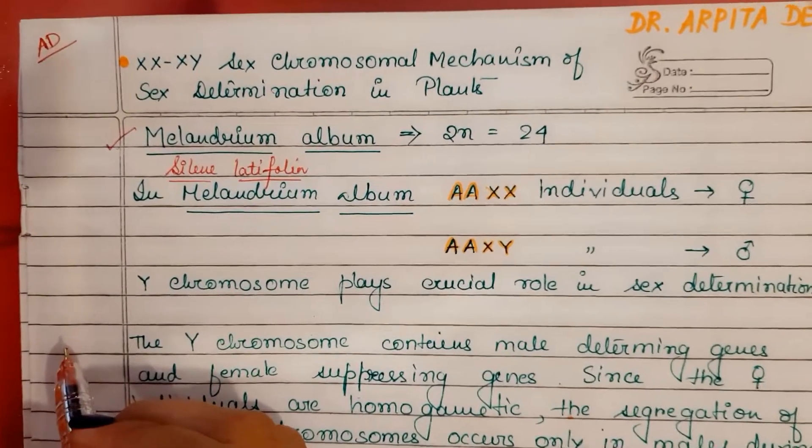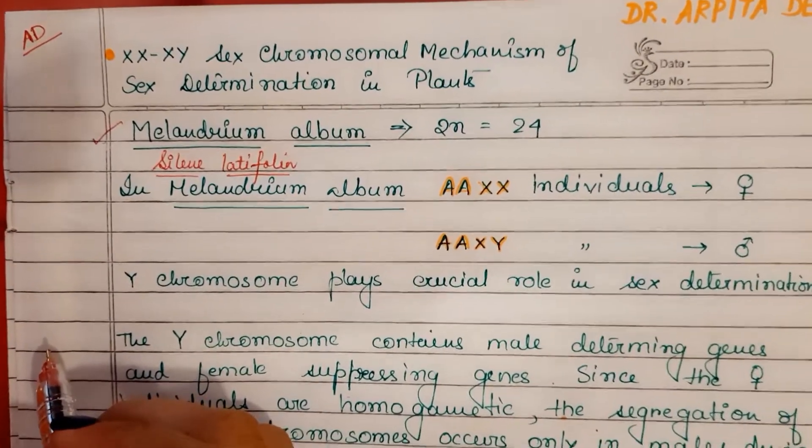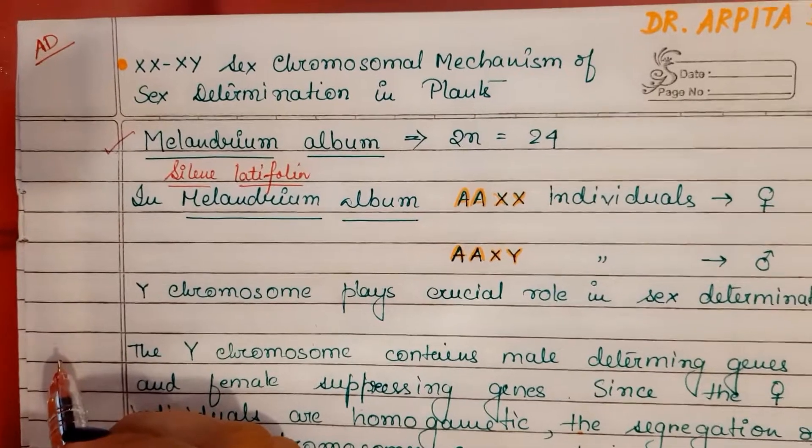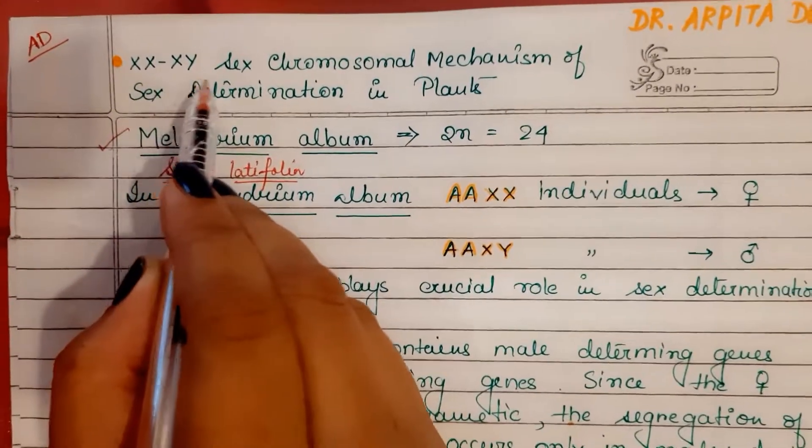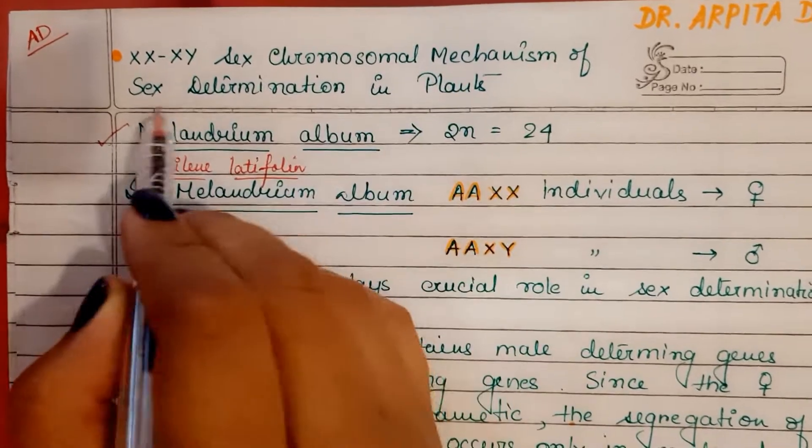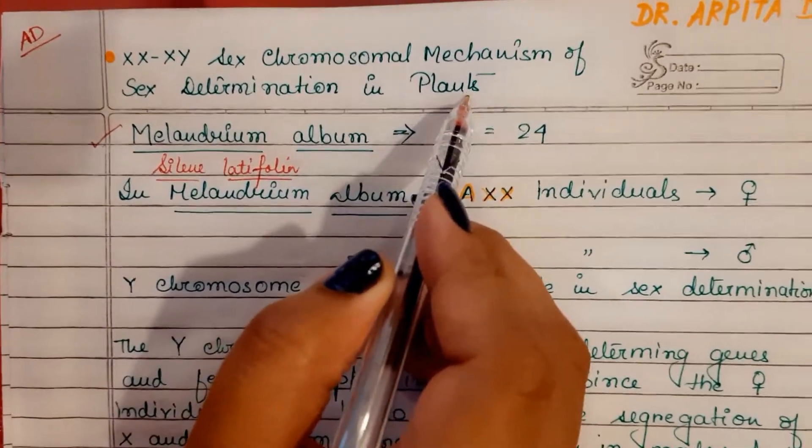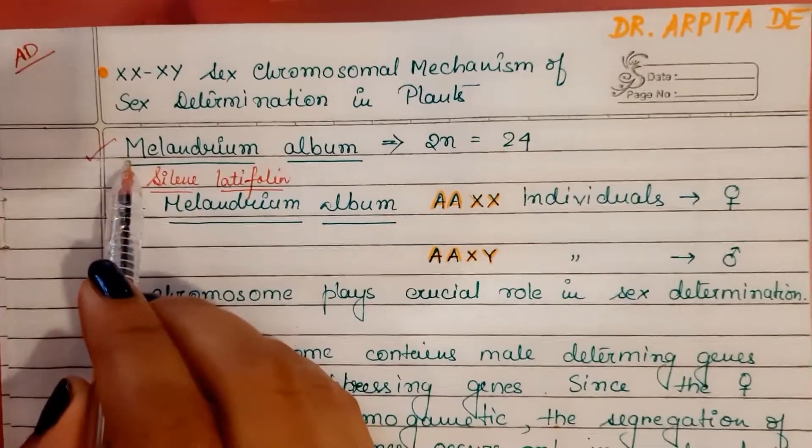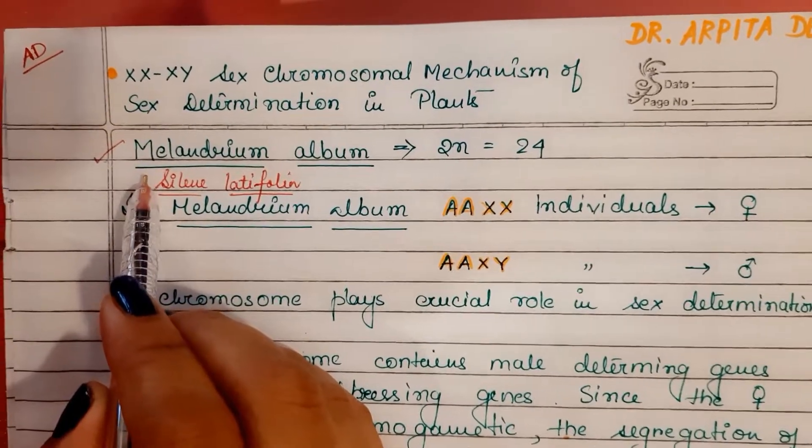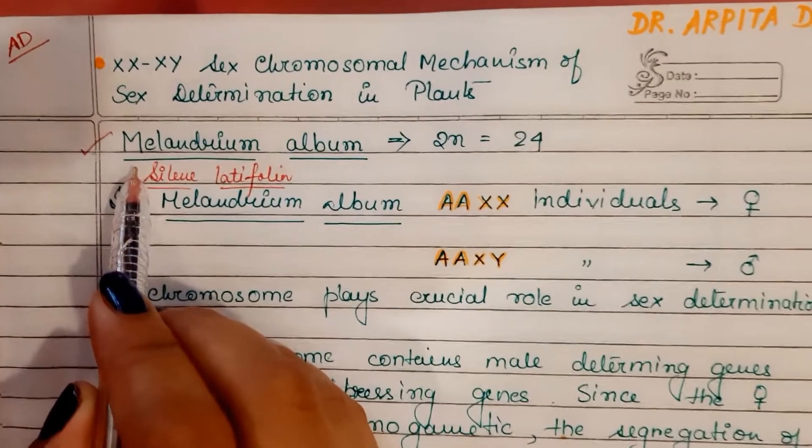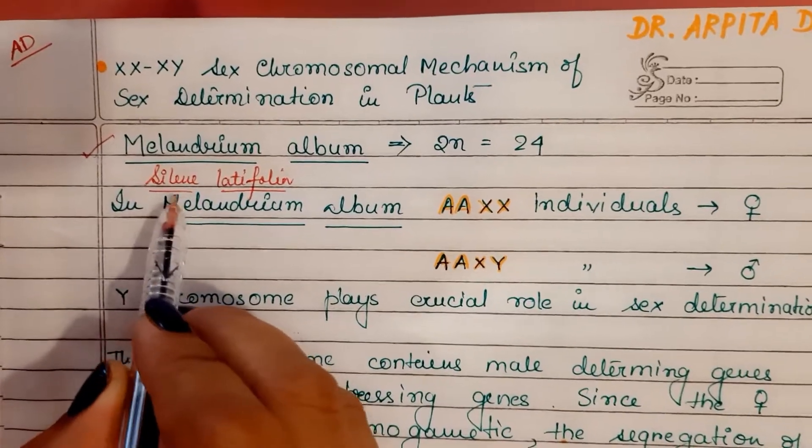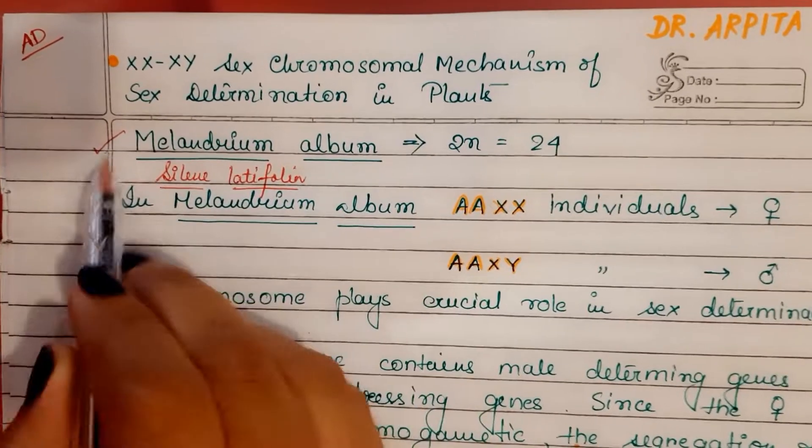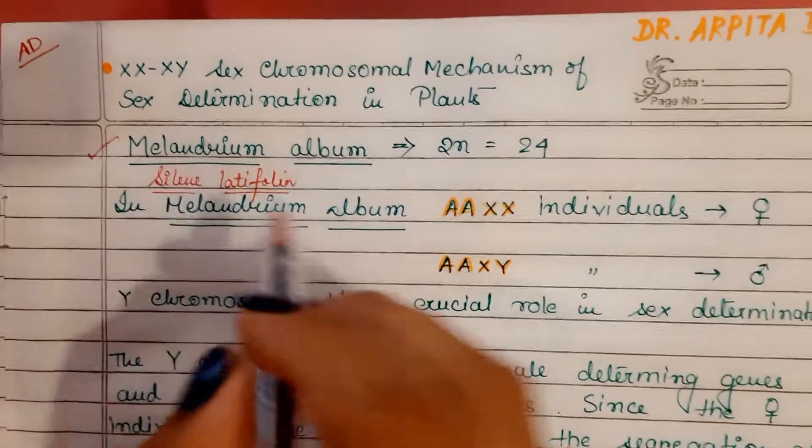Hello everyone, I'm Dr. Arpita. A very warm welcome to my genetics classes. The topic for today's discussion is XY sex chromosomal mechanism of sex determination in plants. The model plant that we have chosen for today's discussion is Melandrium album, which is also known as Selene latifolia. This is a synonym of this plant name.